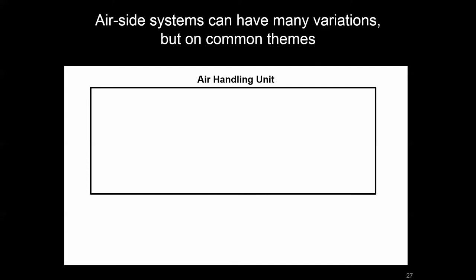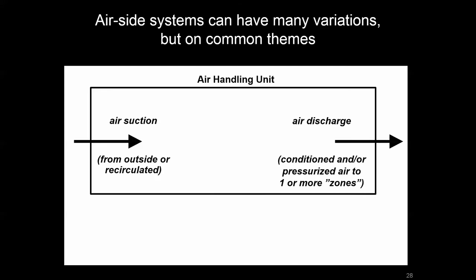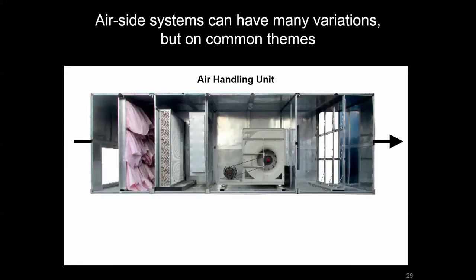Now let's look at the key components of airside systems. This is the black box air handling unit — you can't see into it when you walk into your mechanical room, but you can understand that there's an inlet or suction side and a discharge or outlet side. Air comes in as outside air, return or recirculated air, or some mixed combination of the two, and leaves the air handling unit as conditioned supply air brought to the zone for ventilation and load management purposes.